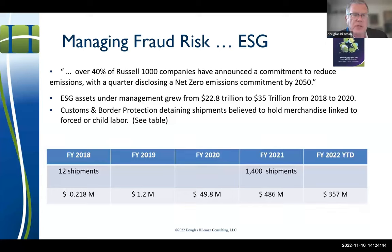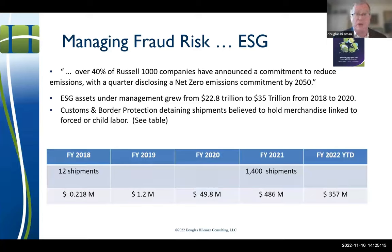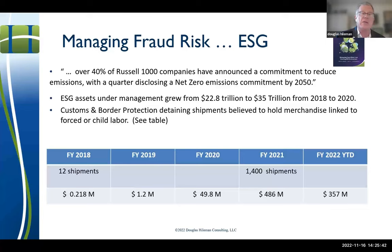The Uyghur Forced Labor Protection Act, which just went into effect this year, creates a rebuttable presumption: if you're importing products that include silica, tomatoes, or cotton — made in significant quantities in the Uyghur region of China using forced labor — they presume it was made with forced labor unless you can prove otherwise. Shipments held at the border went from 12 to 1,400 in just three years, posing an incentive for people to give the 'right answers' to get products through customs.